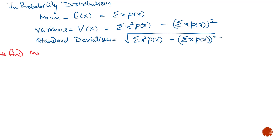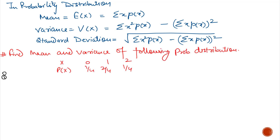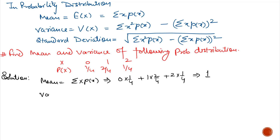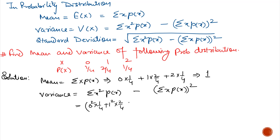We will now explain mean and variance with an example. Find the mean and variance of the following probability distribution, where X = 0, 1, 2 with respective probabilities 1 by 4, 2 by 4, and 1 by 4. Mean equals summation of x times P(x), which is 0 multiplied by 1 by 4, plus 1 multiplied by 2 by 4, plus 2 multiplied by 1 by 4, giving the answer 1. Variance equals summation of x squared P(x) minus mean squared, which is 0 squared times 1 by 4 plus 1 squared times 2 by 4 plus 2 squared times 1 by 4, minus 1 squared, which equals 1 by 2. So mean is 1 and variance is 1 by 2.